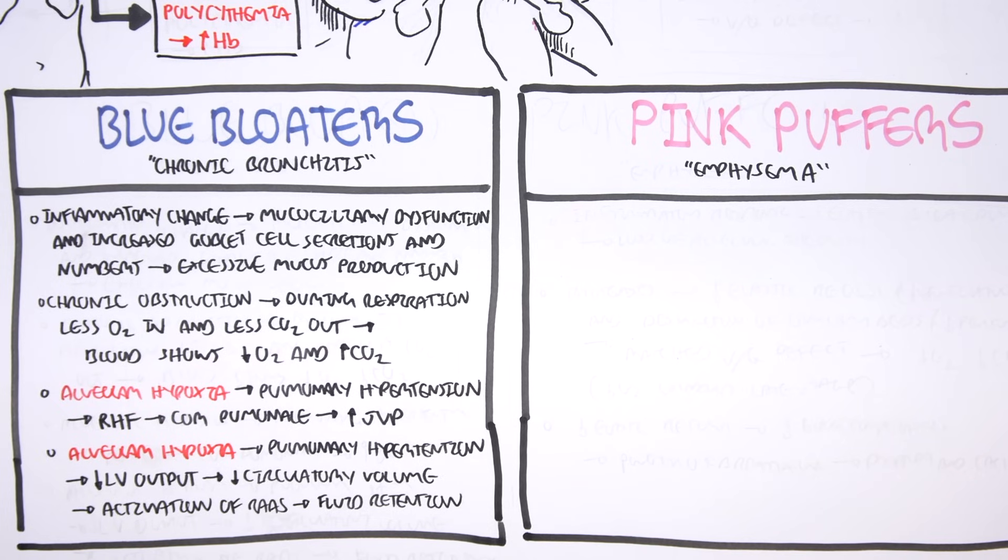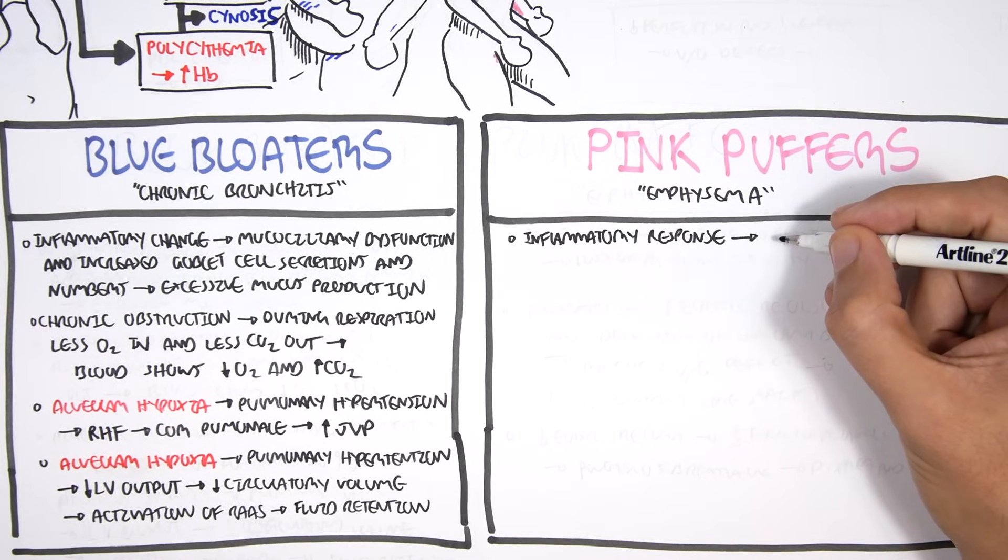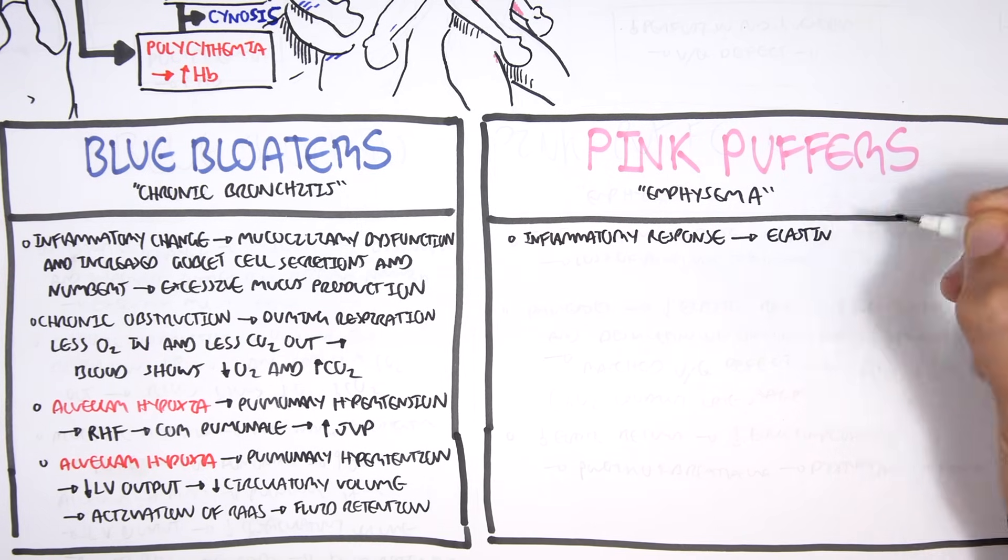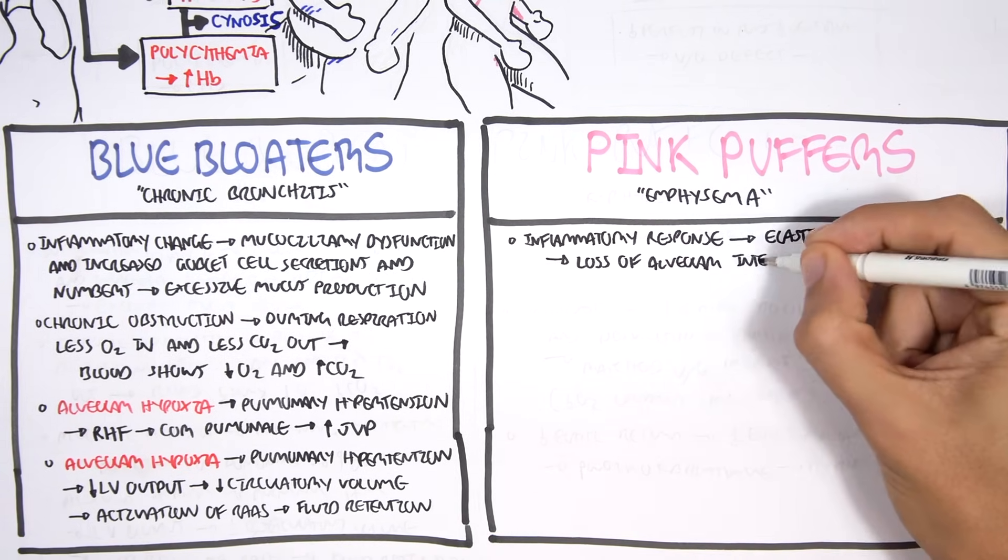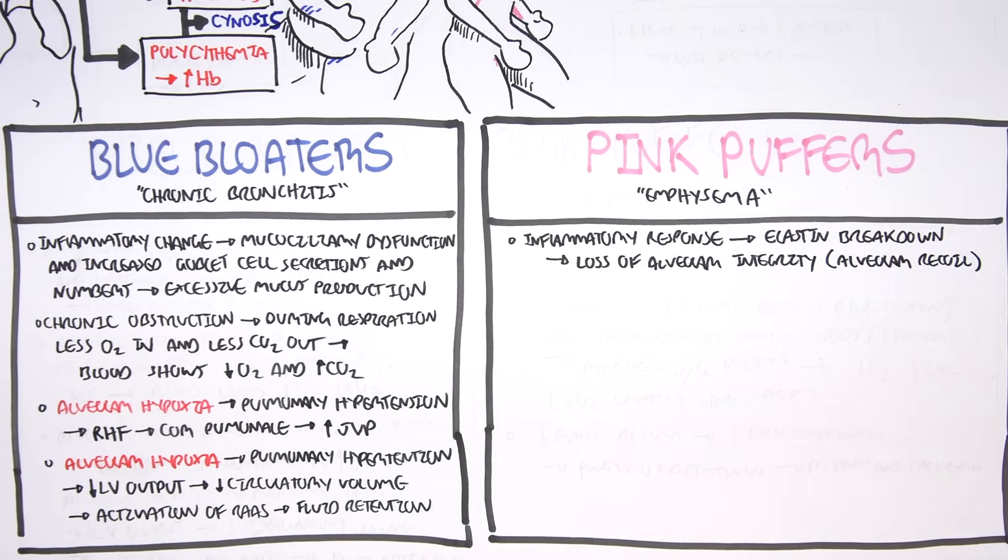Emphysema are known as the pink puffers, very skinny, muscle-wasting, but prominent thoracic cage, barrel-chested. Emphysema is an inflammatory response which leads to elastic fiber breakdown and destruction of the alveolar walls, which means loss of alveolar integrity, and so we lose alveolar recoil as well. This leads to a phenomenon known as air trapping, which is typical of emphysema patients.